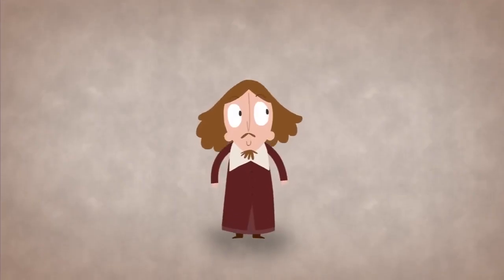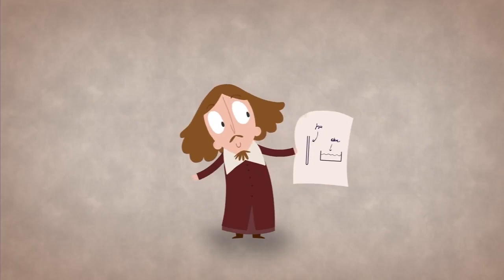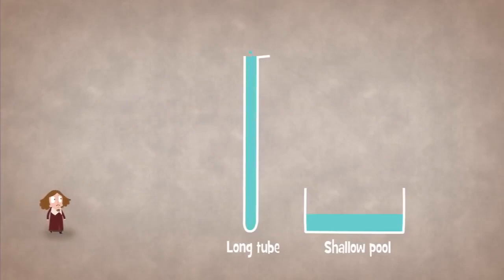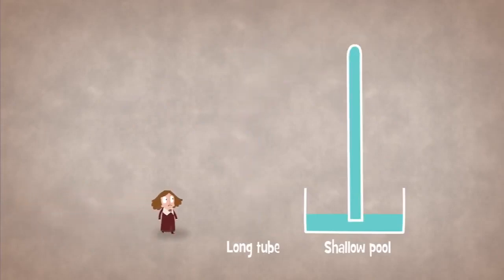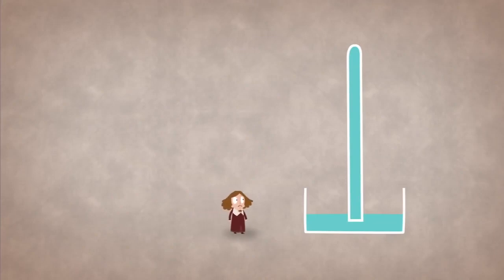However, the idea of a vacuum existing at all was still considered controversial, and the excitement over Galileo's unorthodox theory led Gasparo Berti to conduct a simple but brilliant experiment to demonstrate that it was possible. A long tube was filled with water and placed standing in a shallow pool with both ends plugged. The bottom end of the tube was then opened and water poured out into the basin until the level of the water remaining in the tube was 10.3 meters. With a gap remaining at the top and no air having entered the tube, Berti had succeeded in directly creating a stable vacuum.